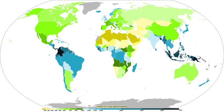The wet, or rainy, season is the time of year — covering one or more months — when most of the average annual rainfall in a region falls. Areas with wet seasons are dispersed across portions of the tropics and subtropics. Savannah climates and areas with monsoon regimes have wet summers and dry winters. Tropical rainforests do not have dry or wet seasons, since their rainfall is equally distributed through the year. When the wet season occurs during the warm season, rain falls mainly during the late afternoon and early evening hours.